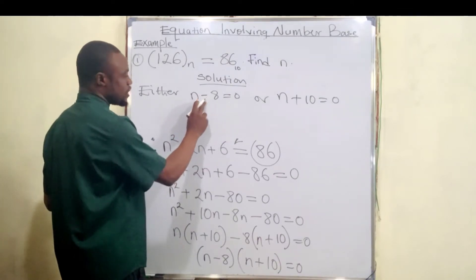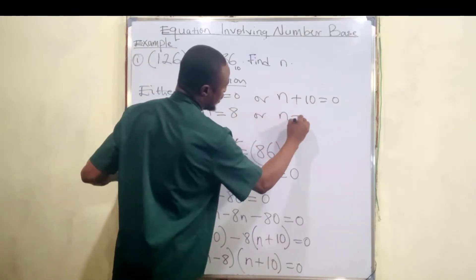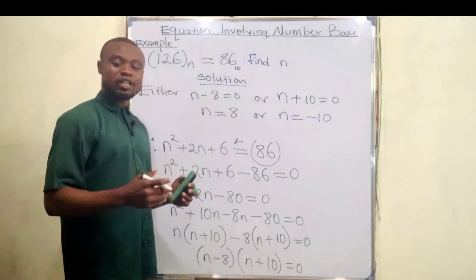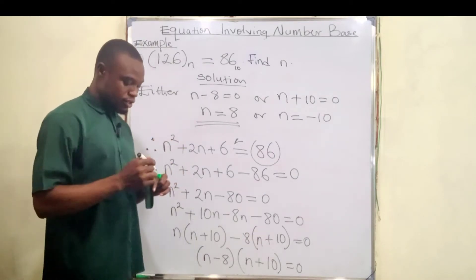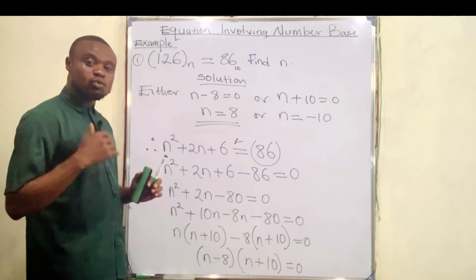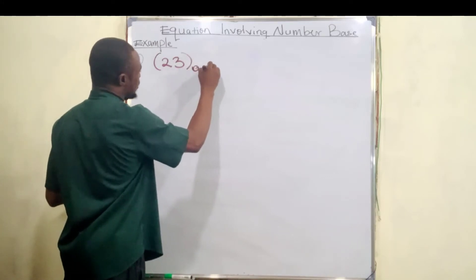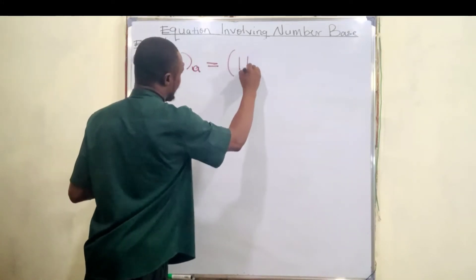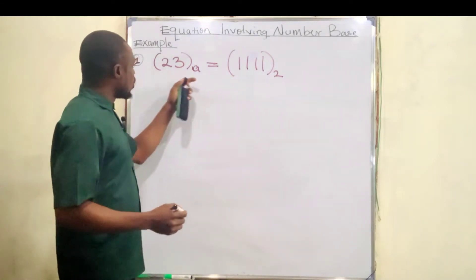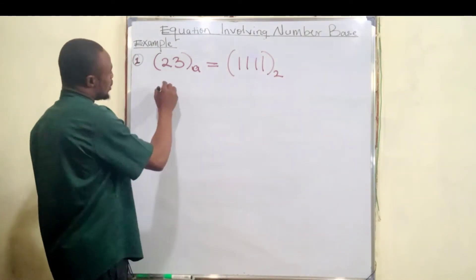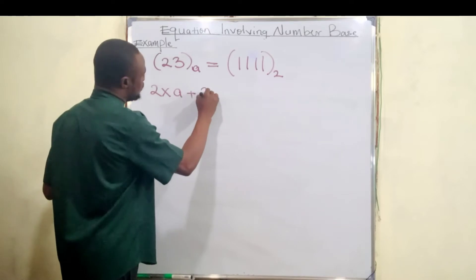That means either n − 8 = 0 or n + 10 = 0. So n = 8 or n = −10. The question says we should find the positive value of n, so n = 8 is our answer for this particular question. Now let me clean the board and do the second question. Question number two is: 23 base a equals 1111 base 2.